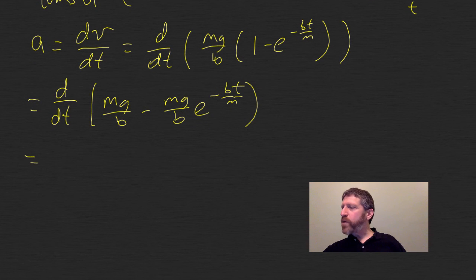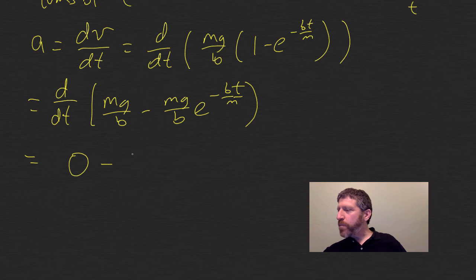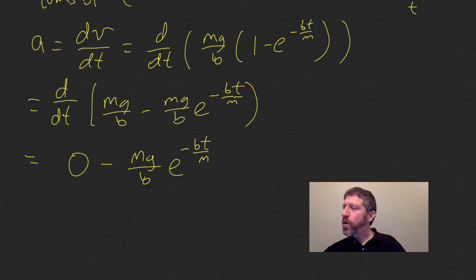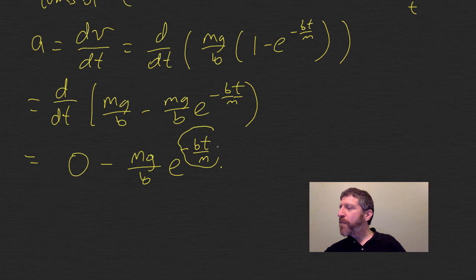The first derivative of the constant mg over b is just zero. For the second term, this is a constant multiplied by e to an exponent, so mg over b stays there. The cool thing about e to whatever power is that its first derivative is just the same thing, except we have to use the chain rule — we multiply by the derivative of the exponent. The derivative of negative bt over m is just negative b over m.